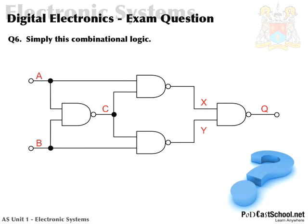Next question: simplify this combinational logic. Now that can look quite daunting, and there was a question similar to this in the last podcast. Sometimes you might not see labels given in the middle of the combinational logic — you might just have A and B as inputs and Q as an output. What you should definitely do is add any labels you need. I normally add labels to the right-hand side of the input but left of the output, using X, Y, or Z to note that those are near the output.